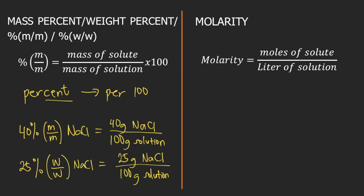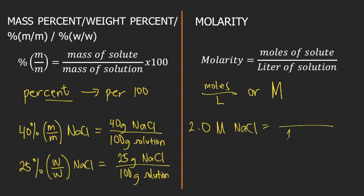Now let's move on to molarity. The formula for molarity is moles of solute divided by liters of solution. The unit for molarity is moles per liter, or capital M, which stands for molar. For example, when you are given 2.0 molar of NaCl, this means that for every one liter of solution, it contains 2.0 moles of NaCl, which is the solute.